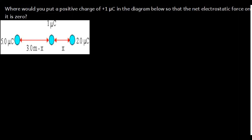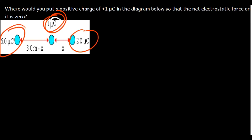What we are going to do here is first find the electric force between the 1 microcoulomb and the 2 microcoulomb, and at the same time between the 1 microcoulomb and the 5 microcoulomb. Then we see what we are going to have. Using this three-body diagram, this is what we are going to have.